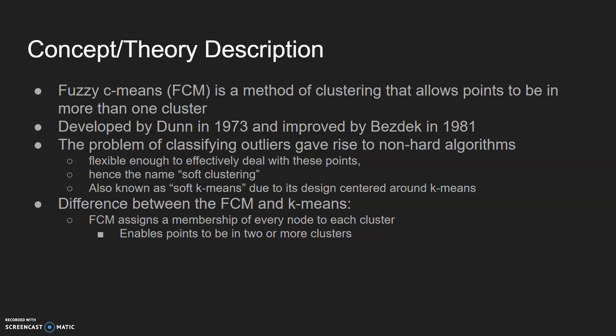The problem of classifying outliers gave rise to non-hard algorithms, meaning soft algorithms that were flexible enough to effectively deal with these points. Hence the name soft clustering, also known as soft k-means due to its design centered around k-means.